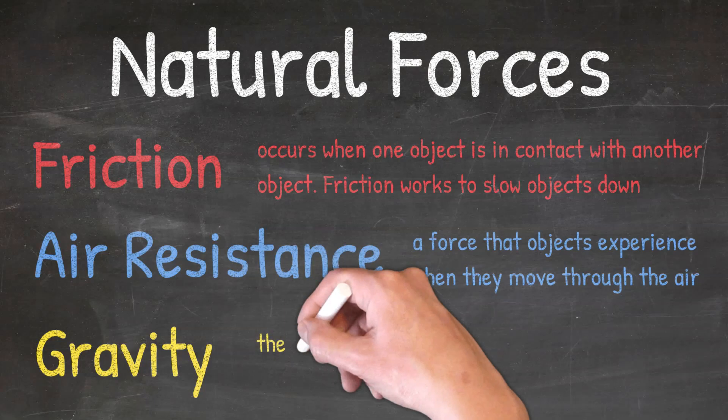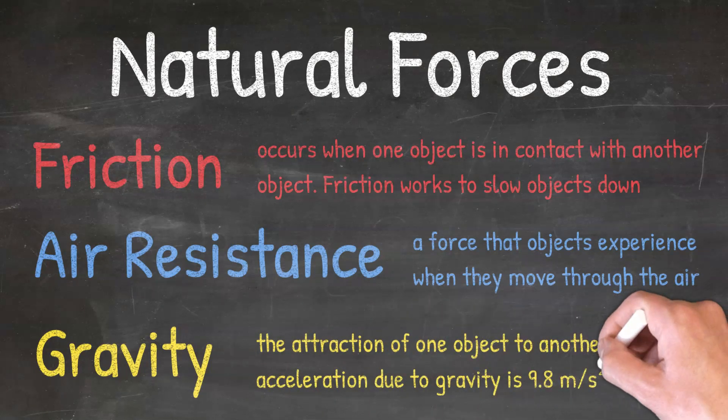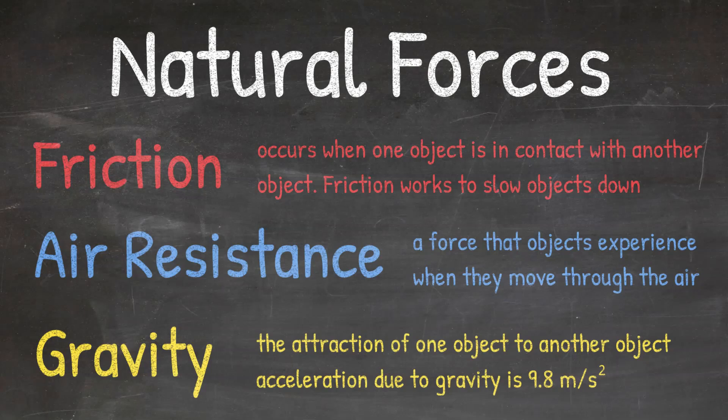And then gravity is just the attraction of one object to another. So on Earth, gravity is the attraction of one object to the Earth. It is a force that will pull objects towards the Earth. On Earth, the acceleration due to gravity is 9.8 meters per second squared. This means that all objects, regardless of their mass, will accelerate downward at the same rate. So if I drop a 10-pound weight and a 50-pound weight from the same height at the same time, they will hit the ground at the same time because they have the same acceleration.